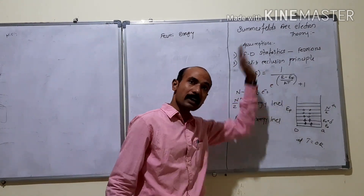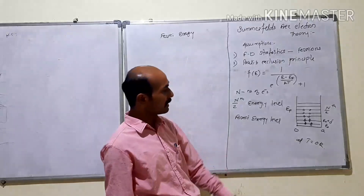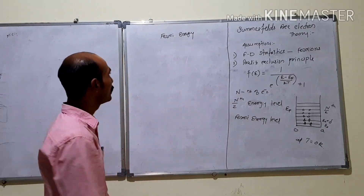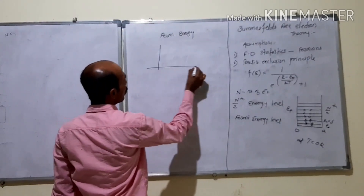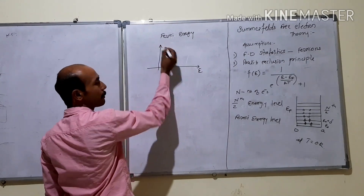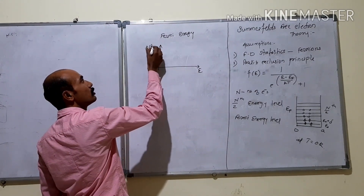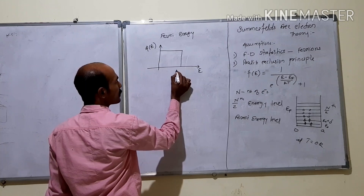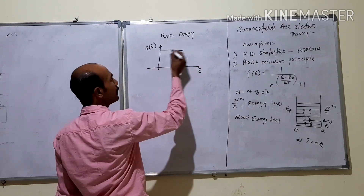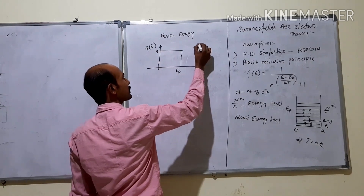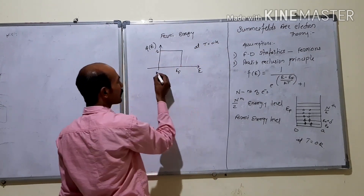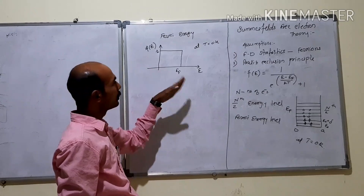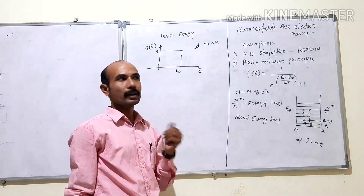The energy levels below this Fermi level are completely filled, and energy levels above this Fermi level are completely empty. If we plot the graph of the Fermi-Dirac distribution function — with energy on the x-axis — at T = 0 K, the graph shows that below EF all states are filled, and above EF all states are empty.